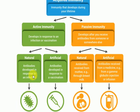Active immunity can be of natural or artificial type. Natural active immunity is when antibodies are developed in response to an infection. For example, in measles, once you get infected, antibodies are produced against the infection, and when the measles is over, there is a lifetime natural active immunity developed against it.